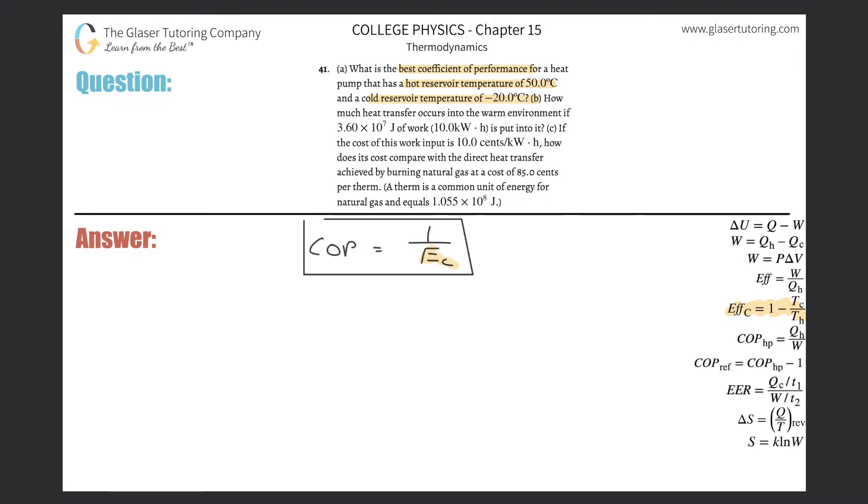So I can basically just do a simple substitution here, where I say that the coefficient of performance is going to be equal to one divided by one minus the temperature of the cold divided by temperature of the hot. And they gave me those values, so I can simply now calculate.